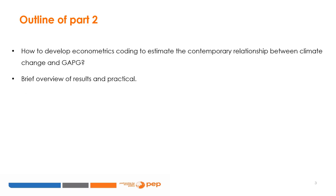We will also show how econometric coding can be developed to estimate the contemporary relationship between climate change and the gender agricultural productivity gap. We will also provide a brief overview of the results and the practical applications that can be achieved.